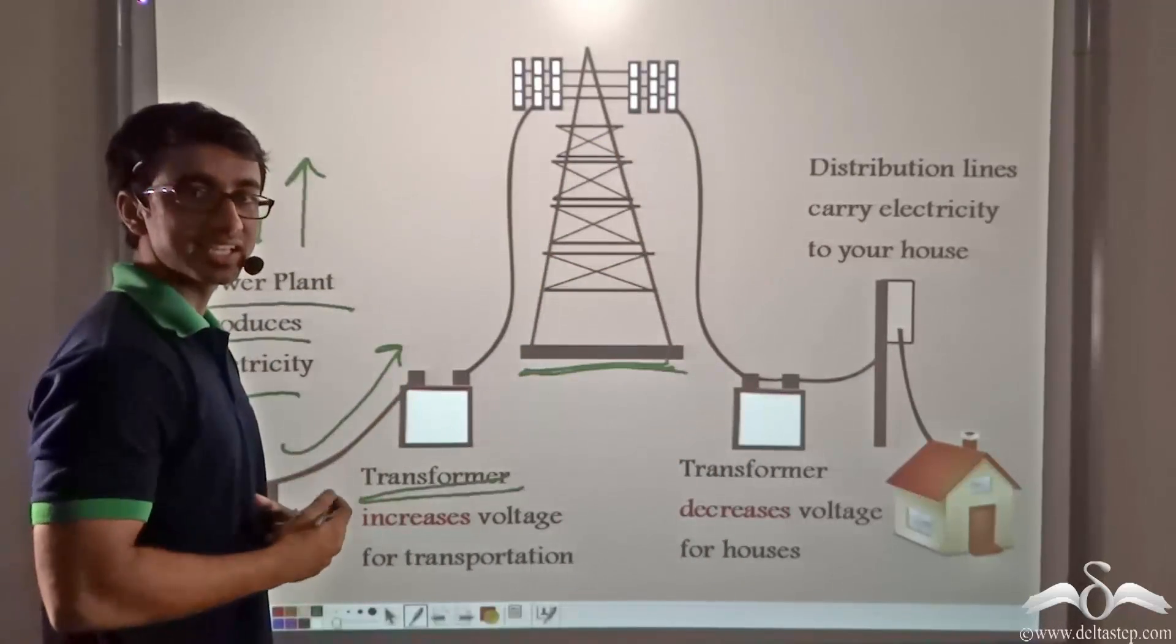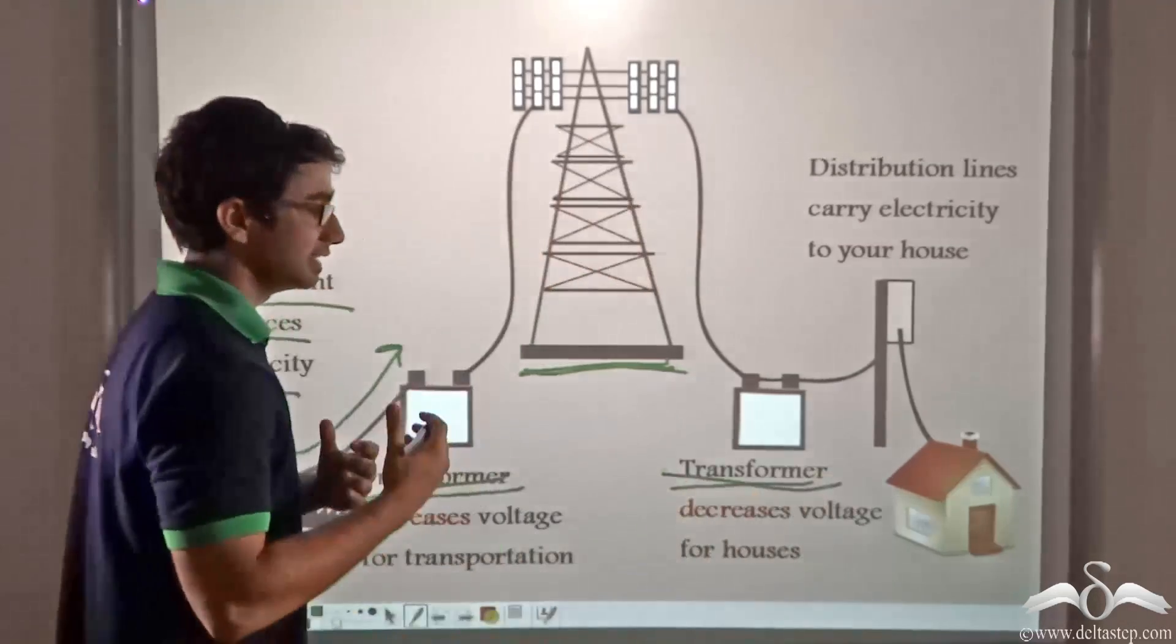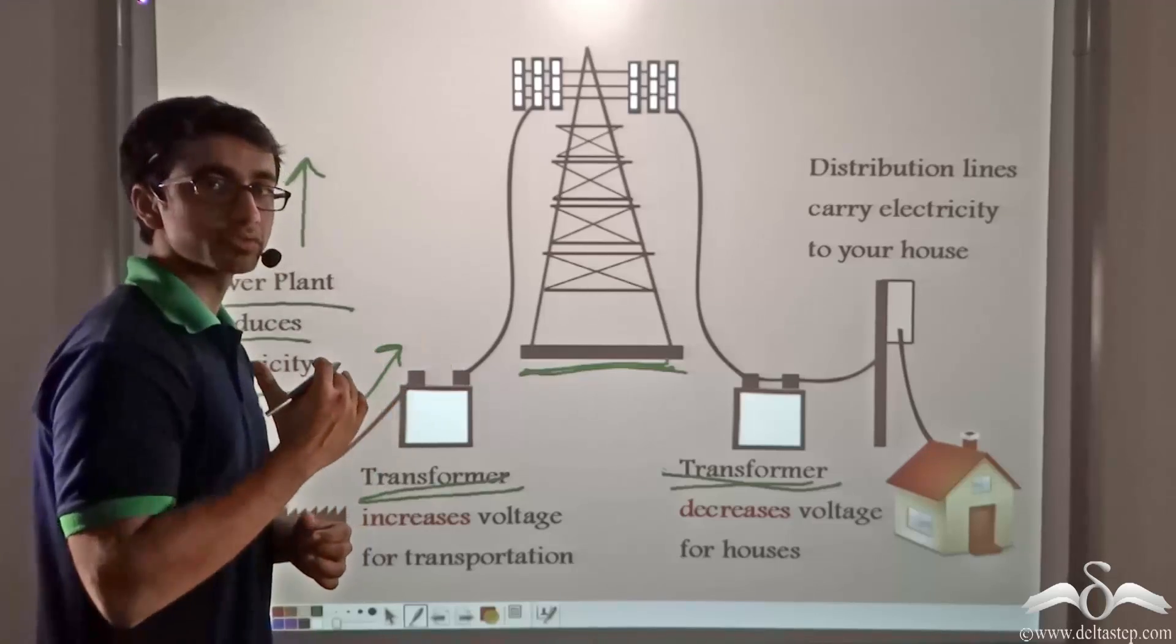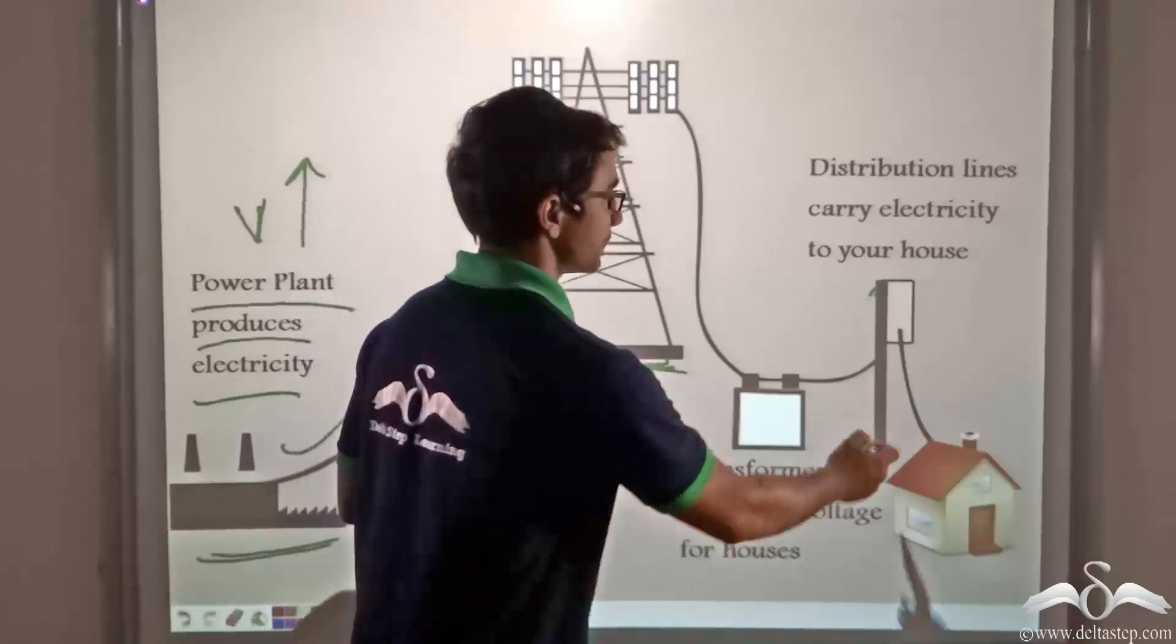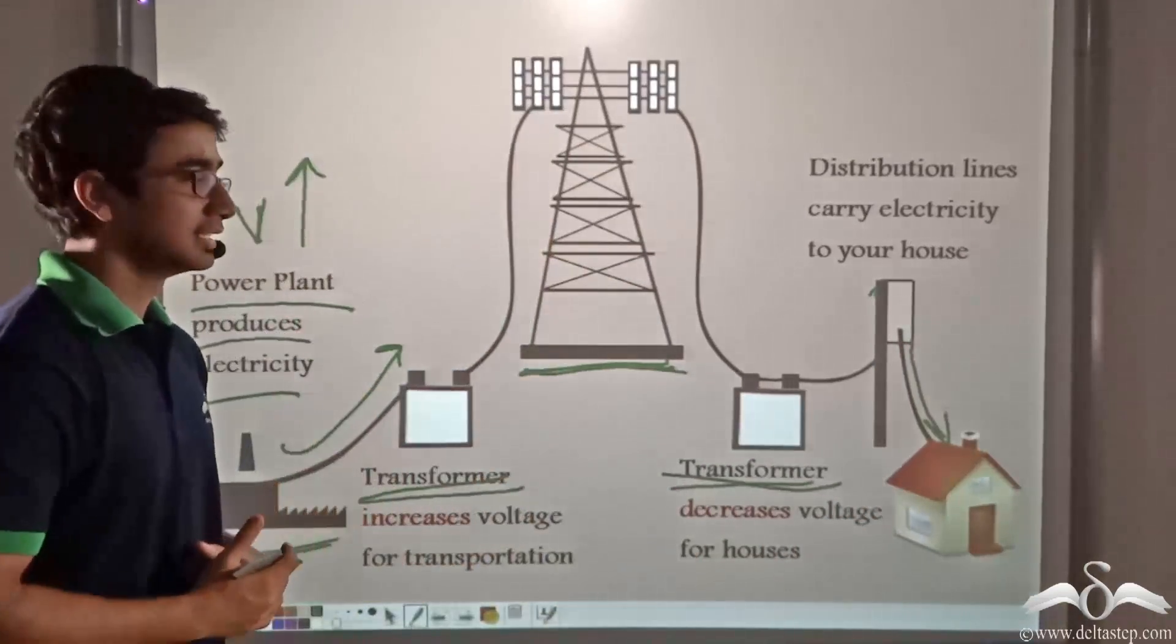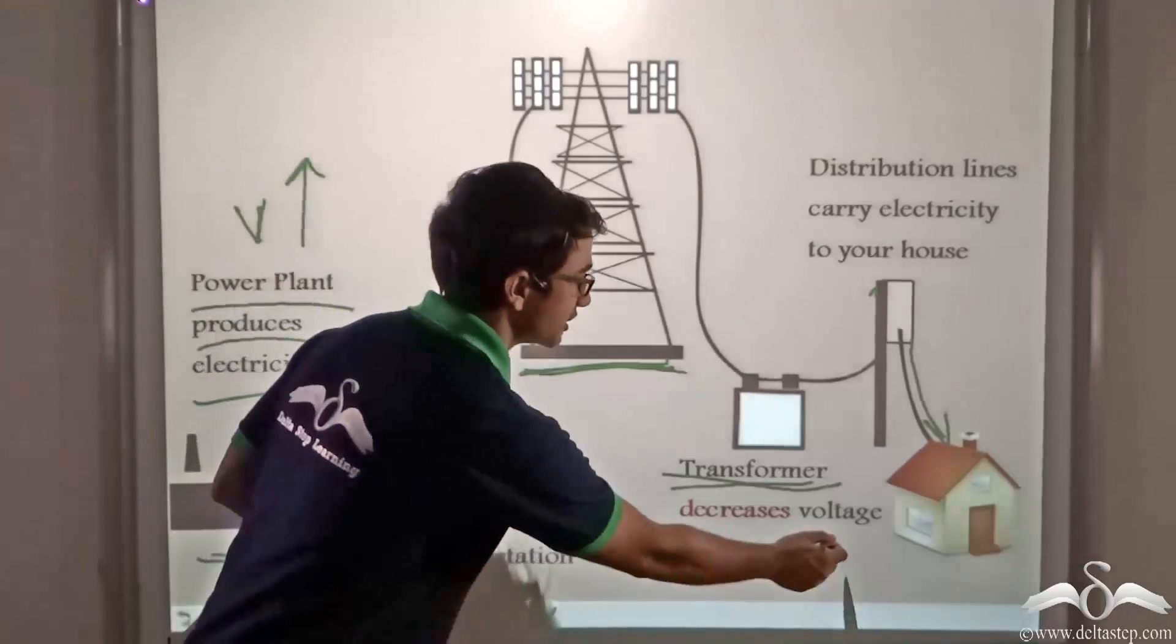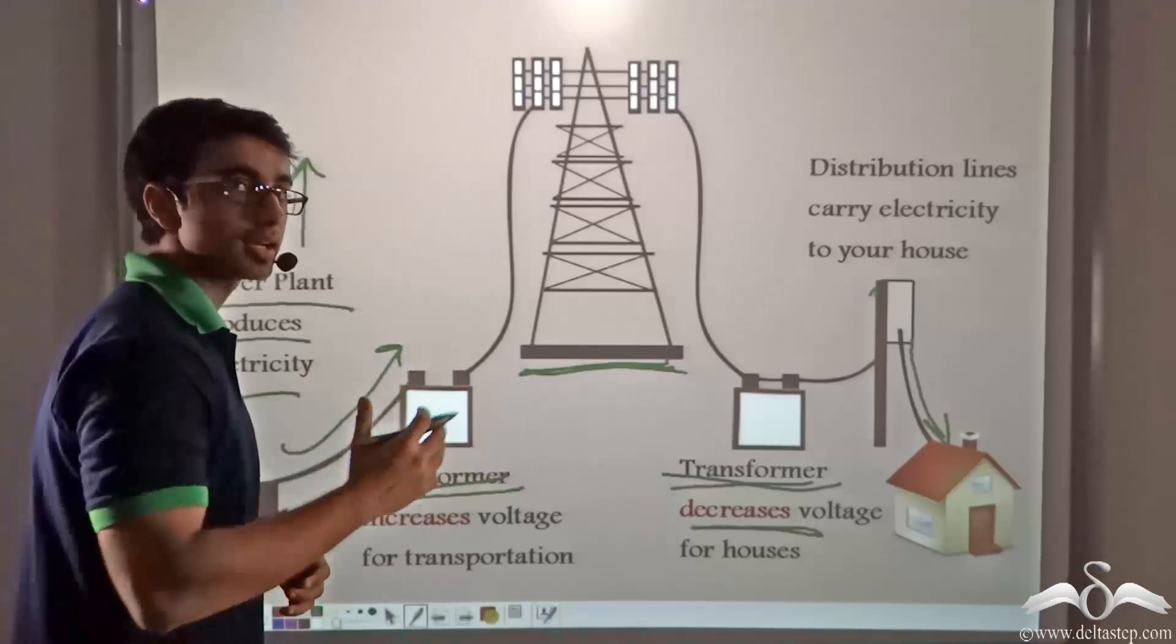So now before this electricity actually reaches our homes, it encounters a second transformer. This transformer decreases the voltage so that it arrives at a safe limit at our homes. So this safe limit of voltage is then coming to the distribution lines for a neighborhood from which the current or electricity is entering our homes. Notice that in the previous case where the driver had reduced his speed in order to make it safe, even in this case the transformer reduces or decreases the voltage in order to make it safe for the current to enter our homes.